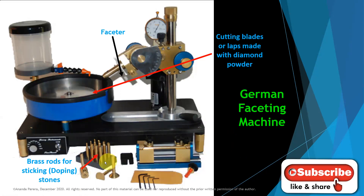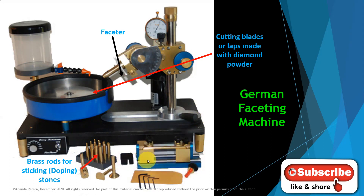These are the doping rods. These allen keys are used to make some adjustments on the machine. This is also used for doping. Doping is a very important step — we have to accurately position the stone to cut; if not, cutting errors happen. We will discuss that later.